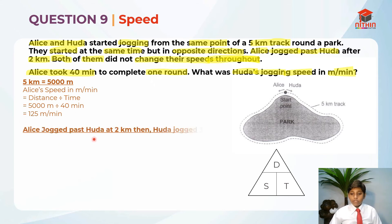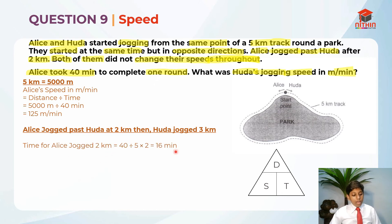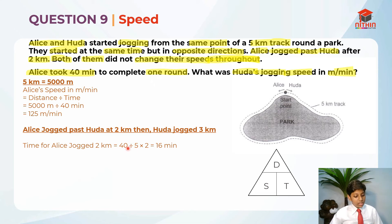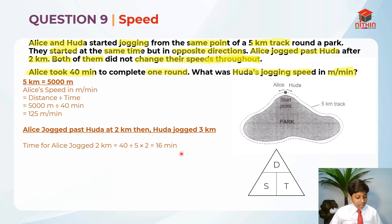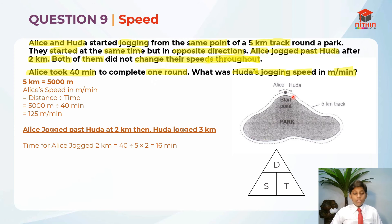We know Alice jogged past Huda at 2km, meaning Huda jogged 3km. Alice jogged 2km and took 16 minutes — we find this by calculating 40 divided by 5 to get the time per kilometer, then multiply by 2 to get 16 minutes. Since they passed each other at the same point and started at the same time, Huda also ran for 16 minutes — but she covered 3km in that time. So Huda is definitely faster than Alice.